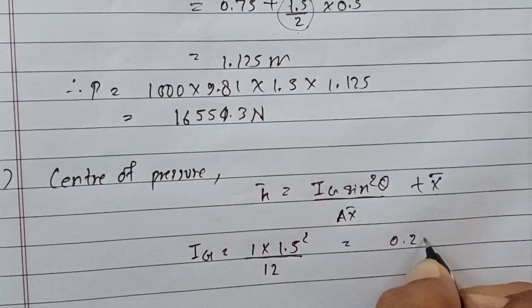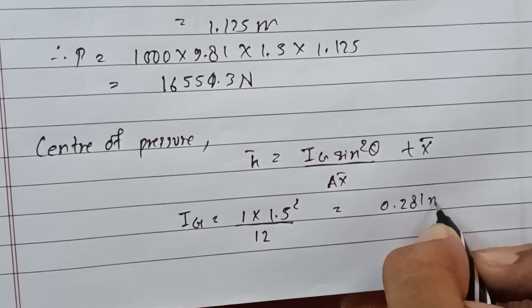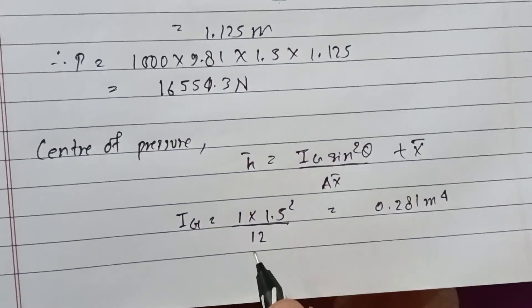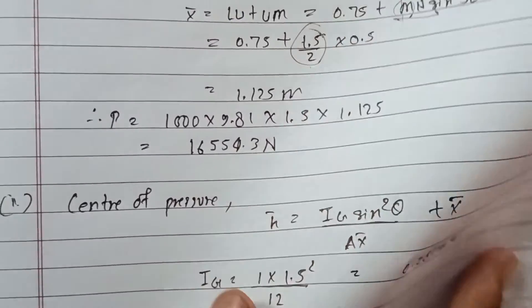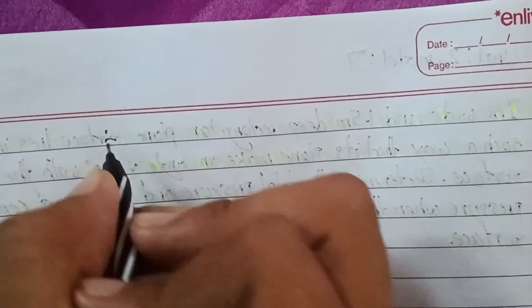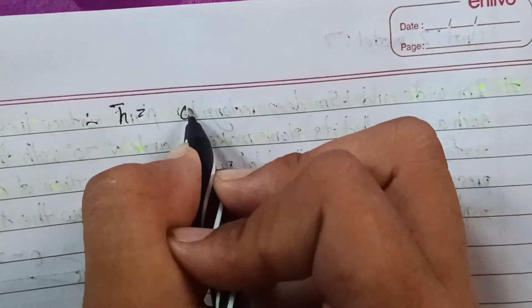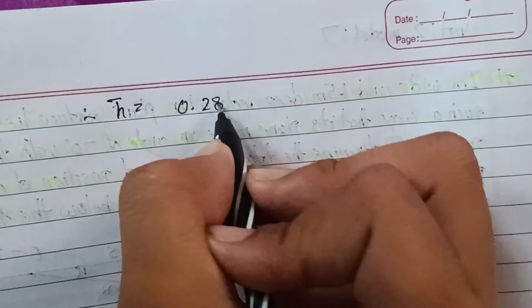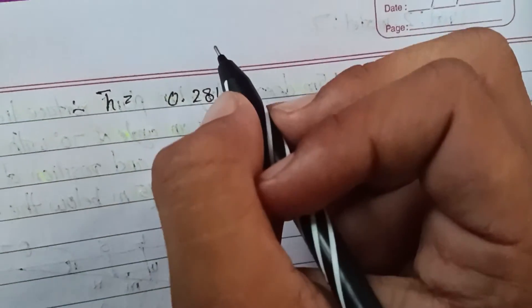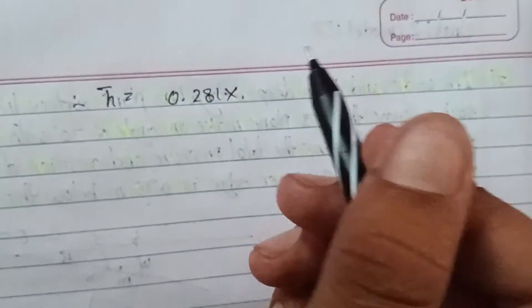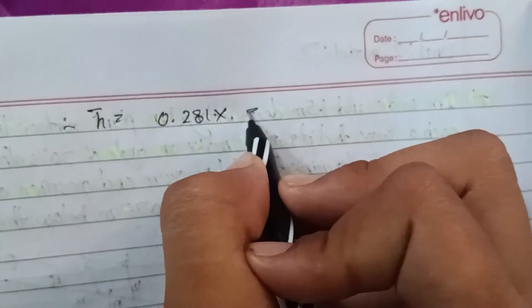Therefore, y-bar equals 0.281 times sine squared theta. Sine theta equals sine 30 equals 0.5. So sine squared 30 degrees equals 0.5 times 0.5 equals 0.25.